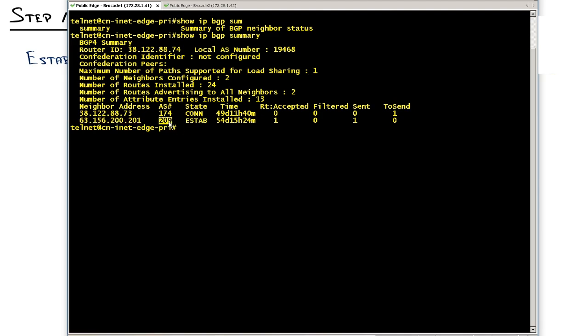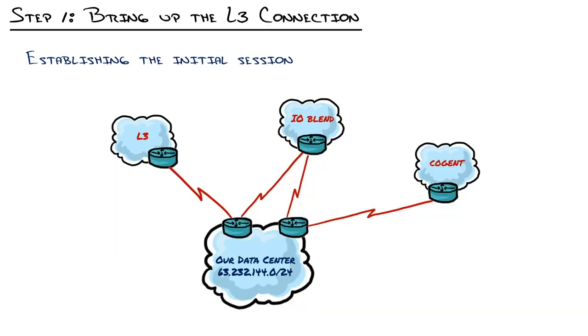First off, I see the remote autonomous system 209. This one is established and it's been that way for 54 days. I can see that I've received one route and I've sent one route. This one is still in a connecting state and it's been that way for 49 days. And I just have one route waiting to send to that neighbor. Now, what's the deal with this? Well, remember, this is the real world.